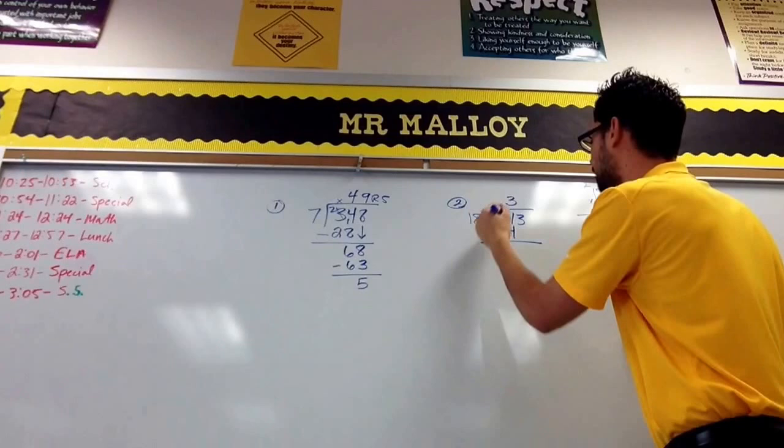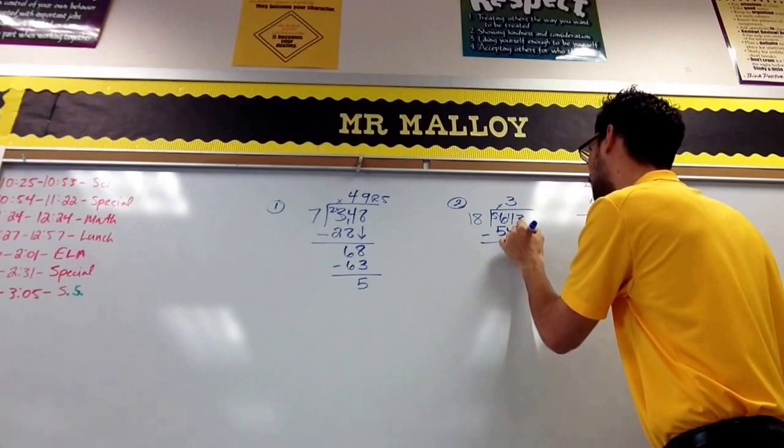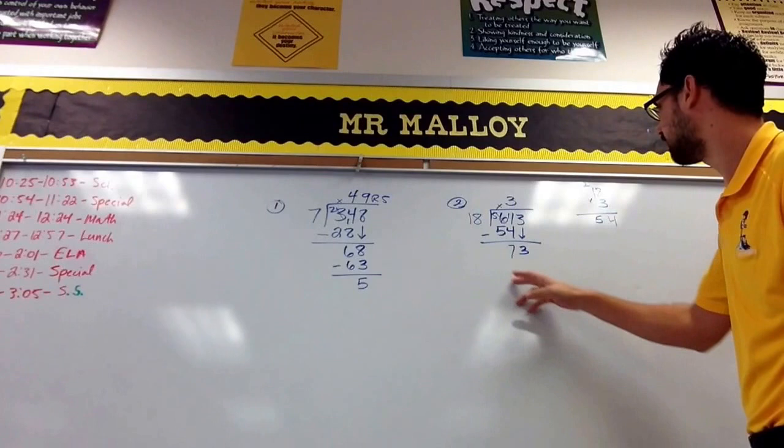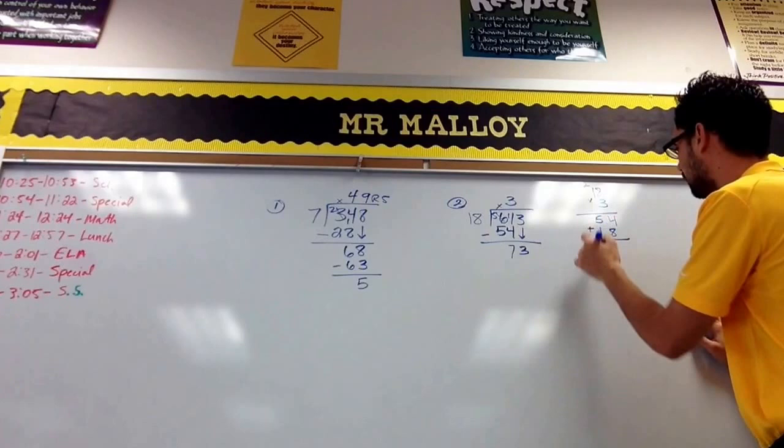11 minus 4 is 7, 11 minus 5 is 6... wait, 6 minus 5 is 1, 11 minus 4 is 7. And then I'll drop down the 3. And then I have to ask myself: well, how many times can 18 go into 73?